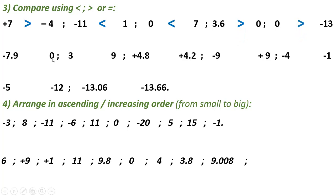Minus 7.9 compared with zero: all negative numbers are less than zero. Comparing 3 and 9: when comparing two positive numbers, the one nearer to zero is smaller, so 3 is less than 9. Plus 4.8 and plus 4.2: since they have the same whole number, I compare the decimal part — 8 is greater than 2, so plus 4.8 is greater than plus 4.2.